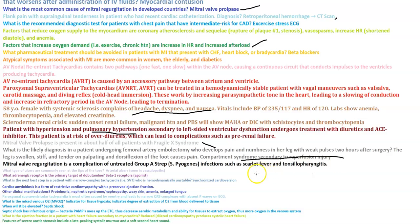Ulcers commonly seen at the tip of the toes are arterial ulcers seen in vasculopaths. The primary adrenergic receptor target of dopamine is the beta-1 receptor.